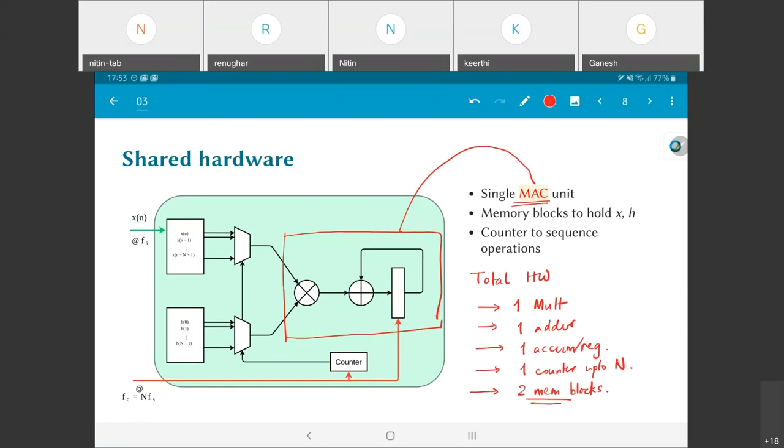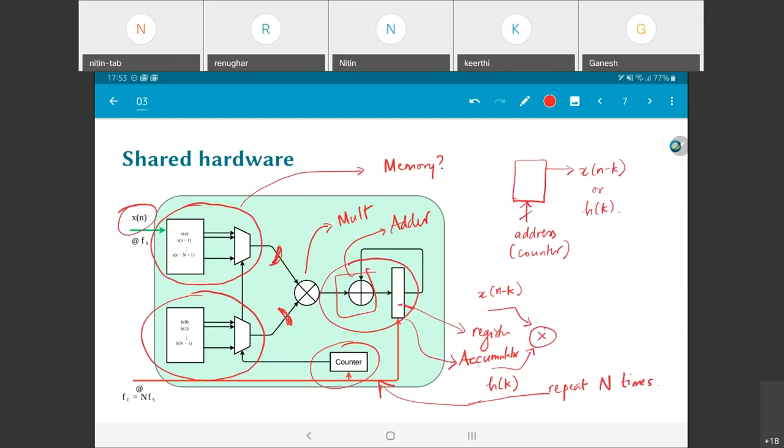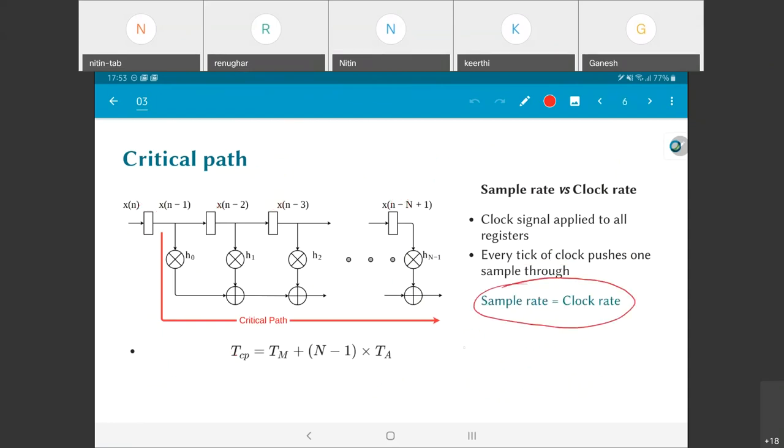On the other hand, the previous architecture that I had over here, in terms of hardware what do I need? I need n multipliers and n minus 1 registers. No memory blocks are required, but on the other hand, the number of multipliers, adders, and the individual registers is much higher.